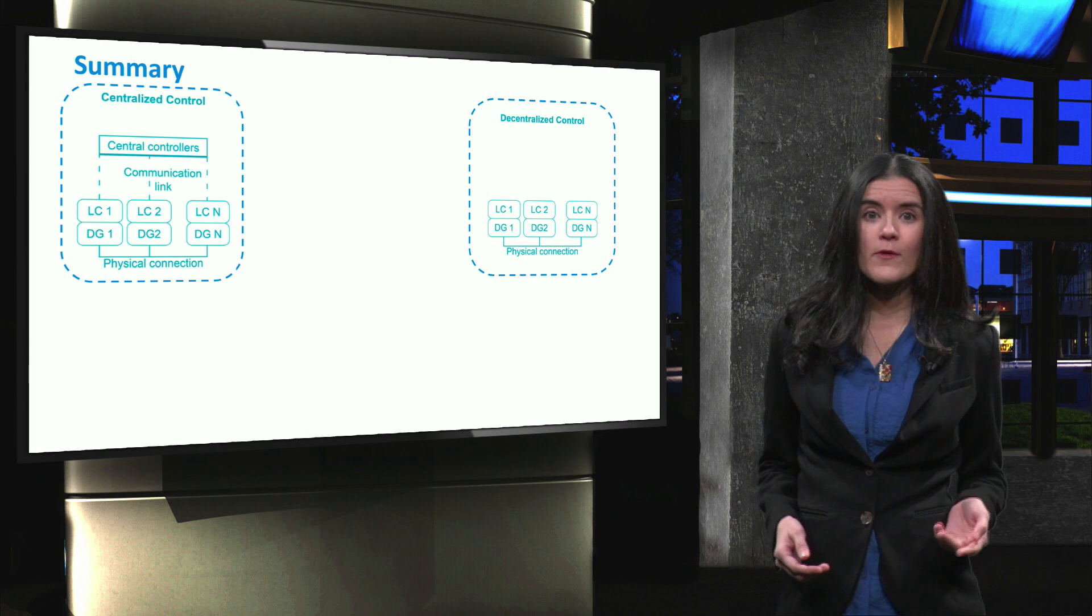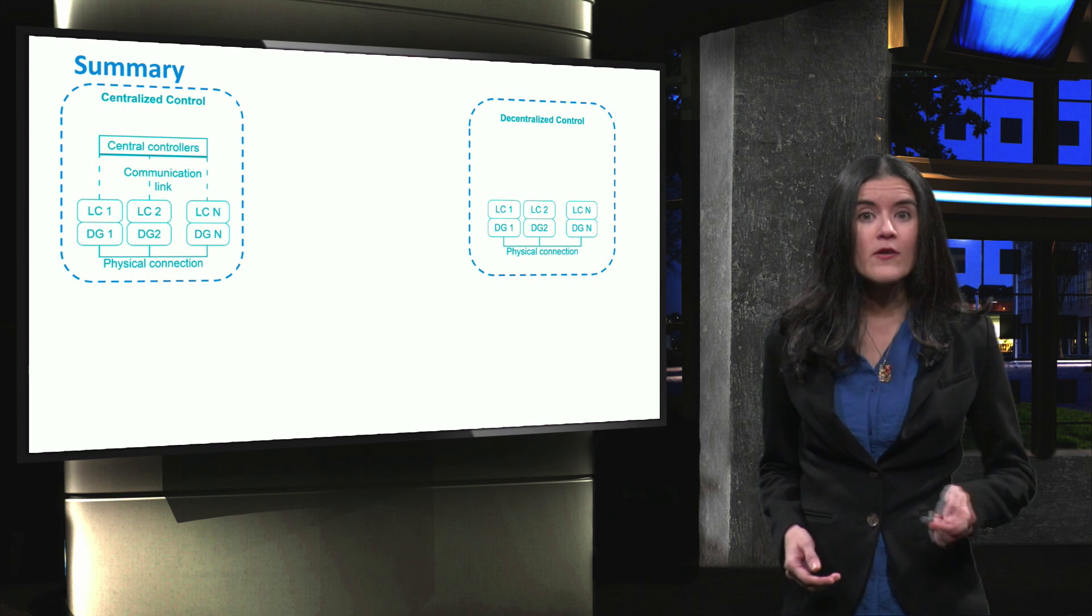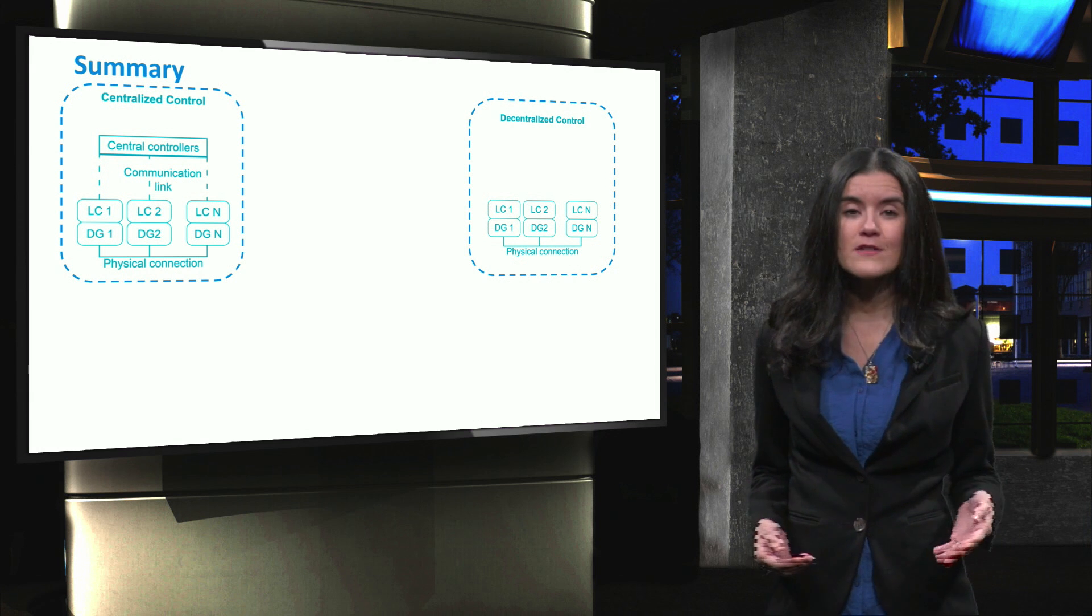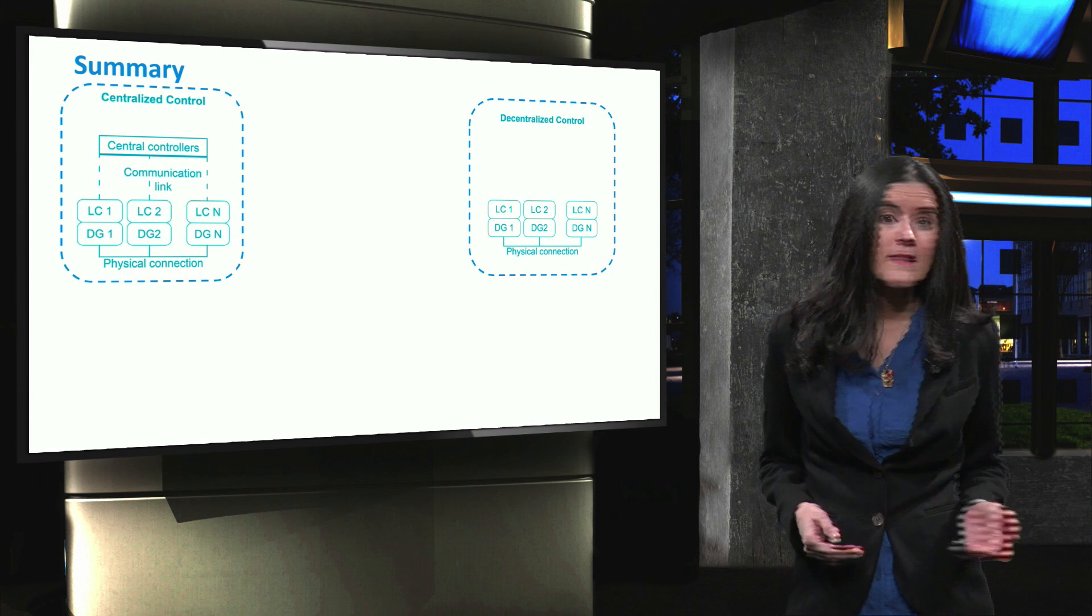optimizes the operation of the microgrid. The microgrid central controller assigns its set points to the loads, distributed generation, and storage units, in order to attain the microgrid's goal.